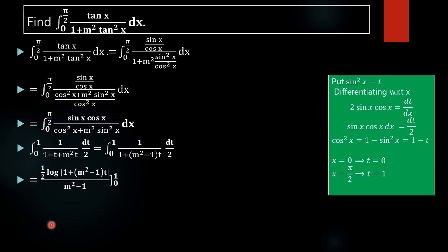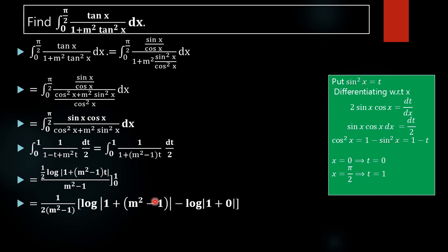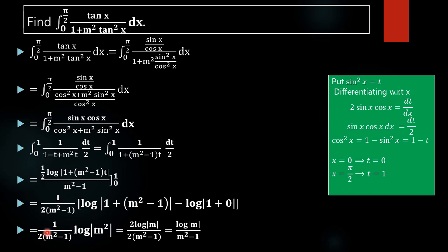Applying the limits from 0 to 1: at t = 1, we get 1 plus (m² − 1) times 1 inside the log, which gives log(m²); at t = 0, we get 1 plus 0, which gives log(1) = 0. So the value of the integral simplifies to (1/2) times (1/(m² − 1)) times log(m²).